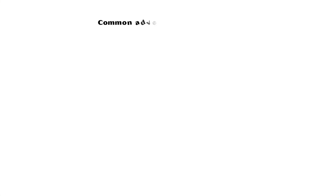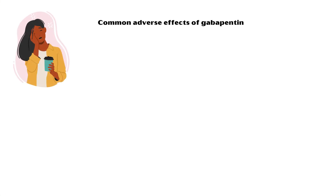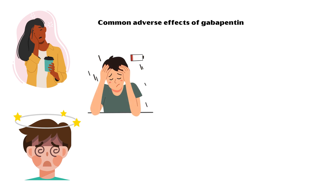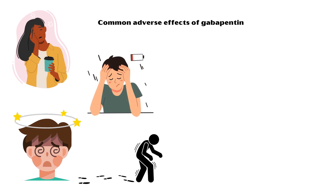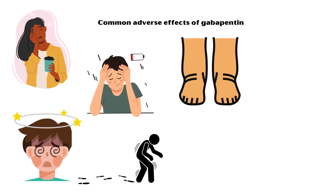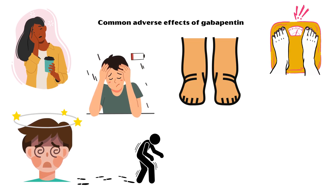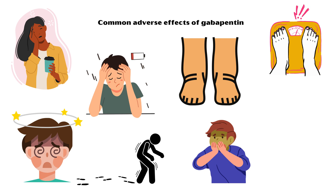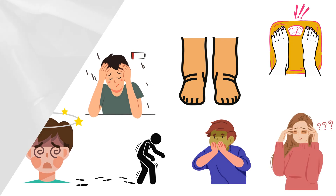Common adverse effects of gabapentin include drowsiness, dizziness, fatigue, ataxia, peripheral edema, weight gain, nausea and vomiting, and blurred vision.